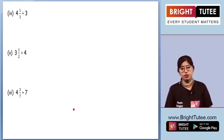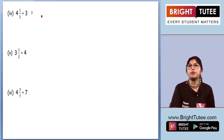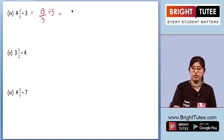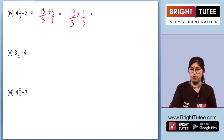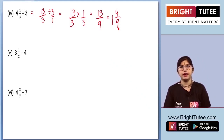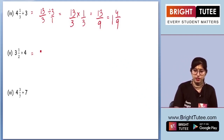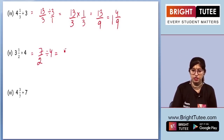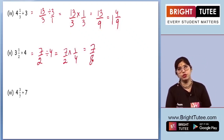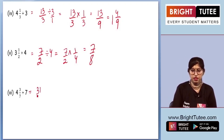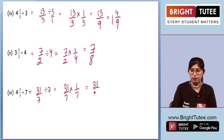Moving on to the fourth part: 4 and 1 by 3. Converting to an improper fraction gives 3 times 4 plus 1, which is 13 by 3, divided by 3. This means 13 by 3 times 1 by 3, and we write down the reciprocal, giving us 13 by 9, and the final answer is 1 and 4 by 9. For the fifth part, doing the same thing, we get 1 by 4, which gives 7 by 8 — a proper fraction, so no further conversion needed. For the sixth part, we get 31 by 7 times 1 by 7, giving us 31 by 49.